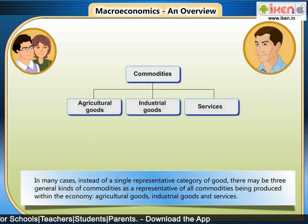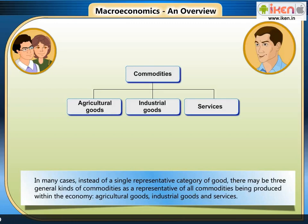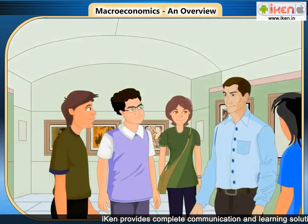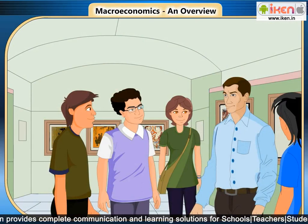Therefore, in many cases, instead of a single representative category of good, we may take three general kinds of commodities as representative of all commodities being produced within the economy: agricultural goods, industrial goods, and services. Is everything clear till now? Yes, Shane. Good, let's move further.